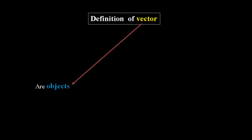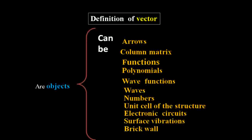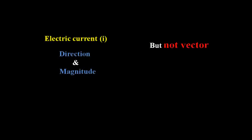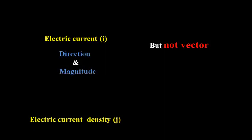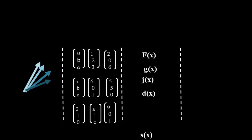How can we define what things are vectors? To do this, let's define the formal definition of vectors. Vectors are objects that can be an arrow, a function, a matrix, a wave function, numbers, or other structures. Vectors can be anything if and only if their addition and scaling satisfy certain axioms. For example, electric current has both direction and magnitude but is not a vector because it does not follow the commutative rule for addition. A collection of arrows, column matrices, functions, or polynomials creates a space called vector space or linear vector space.